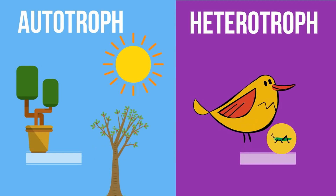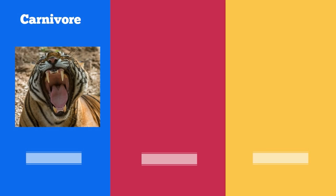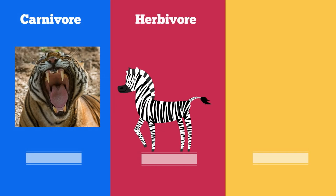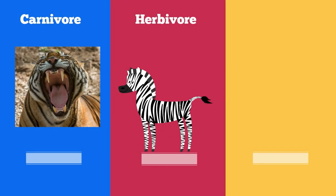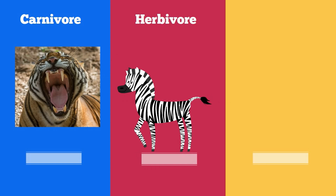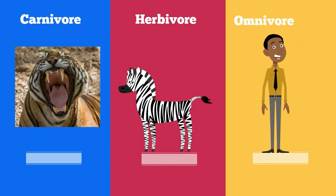Heterotrophs must consume living things for energy. Heterotrophs can be further divided into carnivores, which consume other animals; herbivores, which consume plants; and omnivores, which consume both plants and animals.